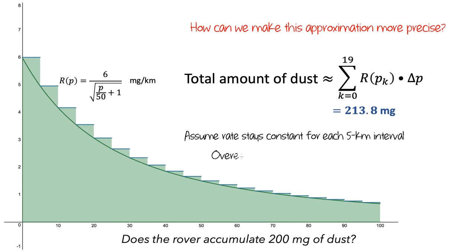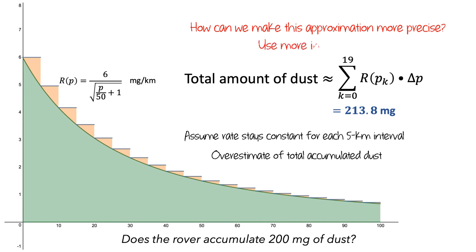Also like before, this is an overestimate of the total amount of dust that accumulates. However, we're only assuming that the rate stays constant over each 5-kilometer interval, and not over the 10-kilometer intervals, so this should make our approximation more precise. We can see this by looking at the amount of error — the error was less than it was before. So the way to make the approximation more precise is to use more intervals.